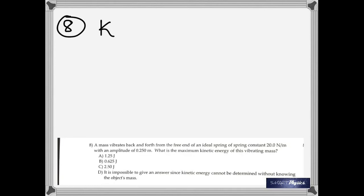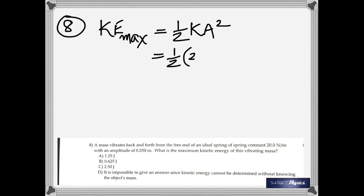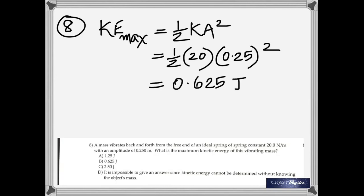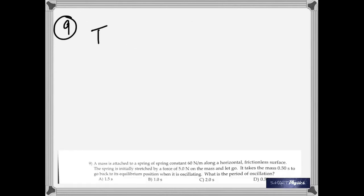Number eight: a mass vibrates from the free end of an ideal spring with spring constant 20 newtons per meter and amplitude 0.250 meters. What's the maximum kinetic energy? Maximum kinetic energy is one-half k a squared — the same formula as maximum potential energy. With k equal to 20 and amplitude 0.25, you get 0.625 joules.